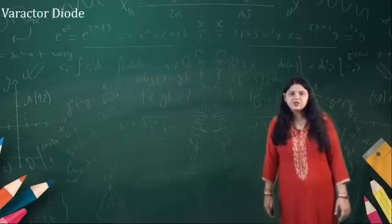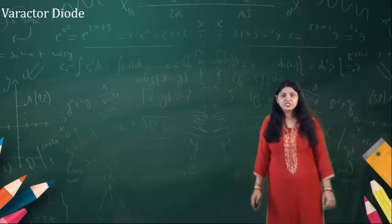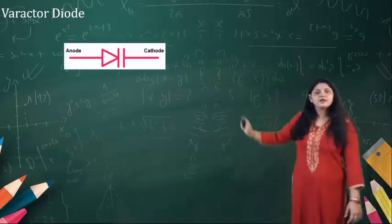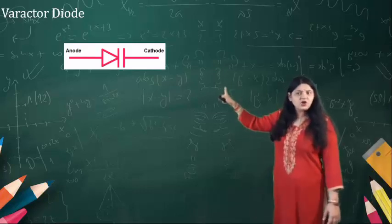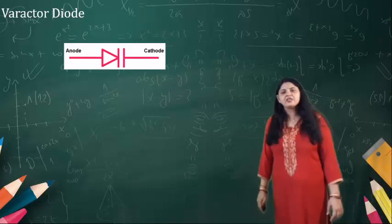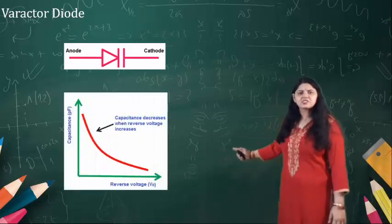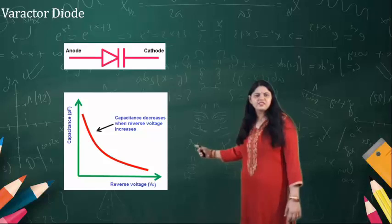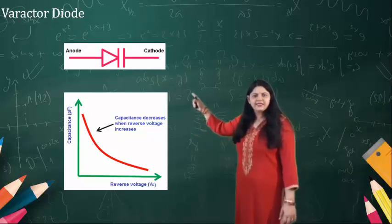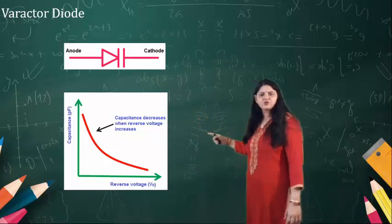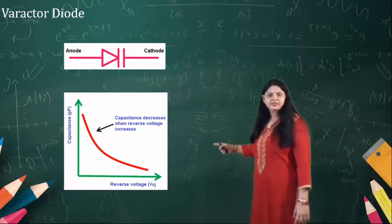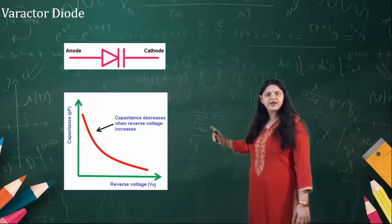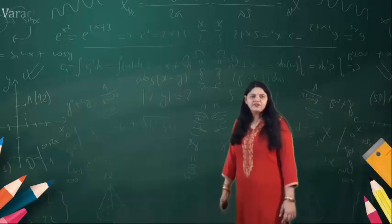The next is the varactor diode. In the parametric amplification of microwaves, the varactor diodes can be used. This is the symbol of the varactor diode which consists of the anode and the cathode. This is the characteristics of the varactor diode. As you can see, as the reverse voltage is very small, the capacitance value is more. While you are increasing the reverse voltage, the capacitance value decreases. This property of the varactor diode is used in the parametric application of the microwave devices.